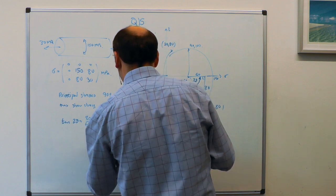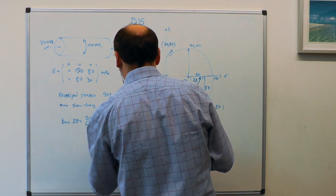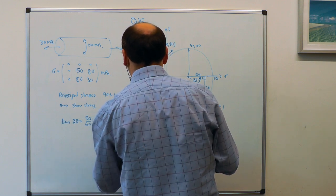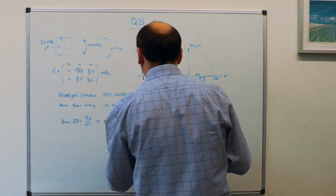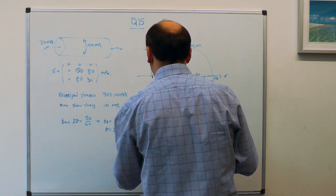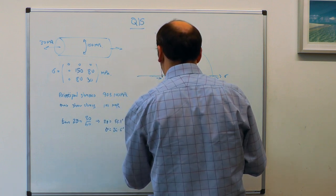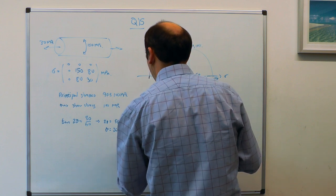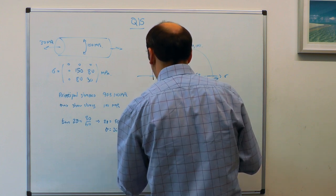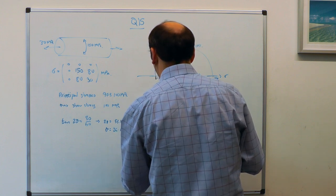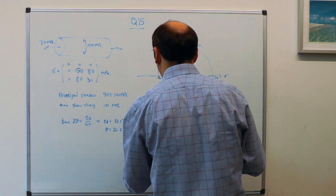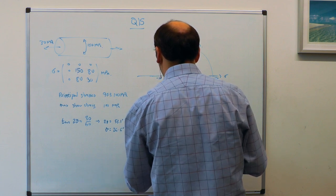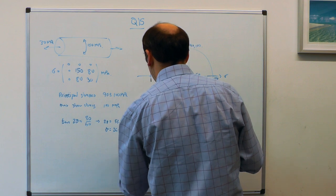And theta is equal to 26.6 degrees, which is the angle between the hoop axis and the 190 MPa principal stress axis.